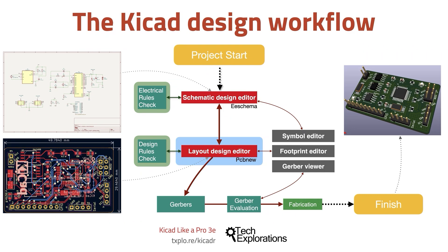Once you have completed the electrical rules check and symbol-to-footprint associations, you can continue with the KiCad layout design editor, PCB New. You use PCB New to position the footprints on the sheet and connect the footprint pins using wires. You also add an outline that marks the outer limit of the PCB and other design elements like mounting holes, logos, and instructional text. Once you have your PCB laid out and its traces completed, you can go ahead and do the design rules check, which looks for defects in the board such as a trace that is too close to a pad or two footprints that are overlapping.